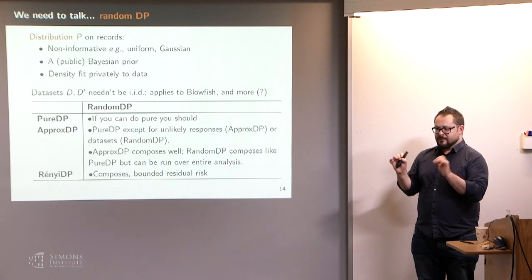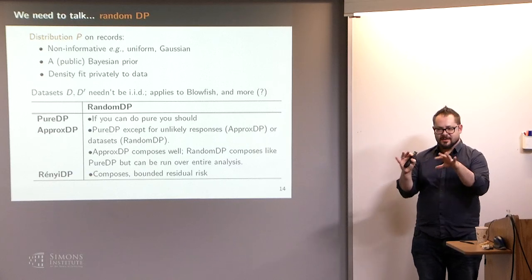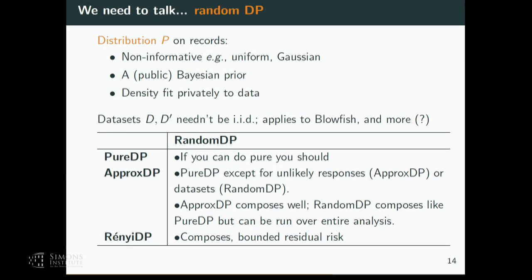Let's talk about random differential privacy a bit, because you can only suspend disbelief for so long. This is my attempt to think about pros and cons. Pure DP is my first true love and that's never going away. First: the distribution. What could you use? Maybe something non-informative, like uniform or Gaussian — you could do that, it might not be convincing depending on your data domain. The advantage is you can run things ahead of time and do lots of samples, analyzing the function you need sensitivity for extensively.